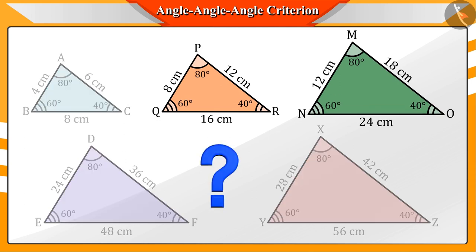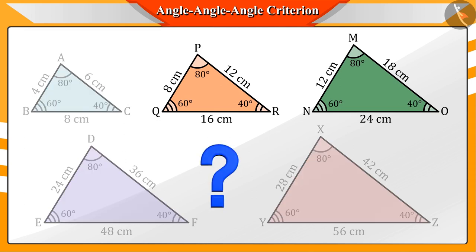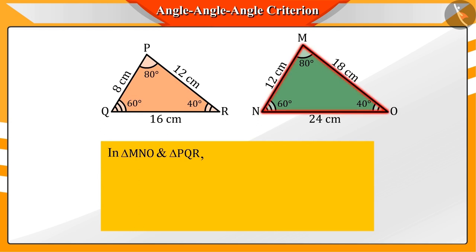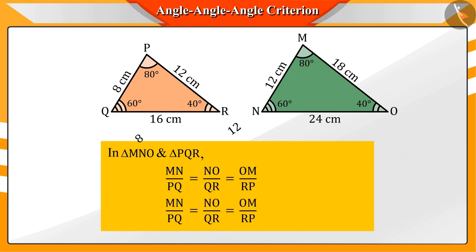Can you tell the ratio of the corresponding sides of triangles MNO and PQR? If we look at these two triangles MNO and PQR, then we see that the ratio of the corresponding sides is 3 by 2.